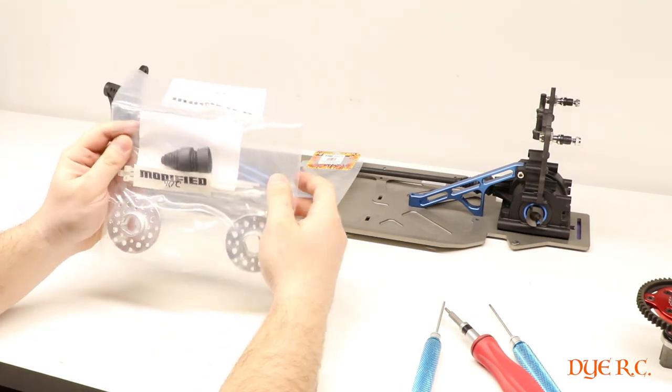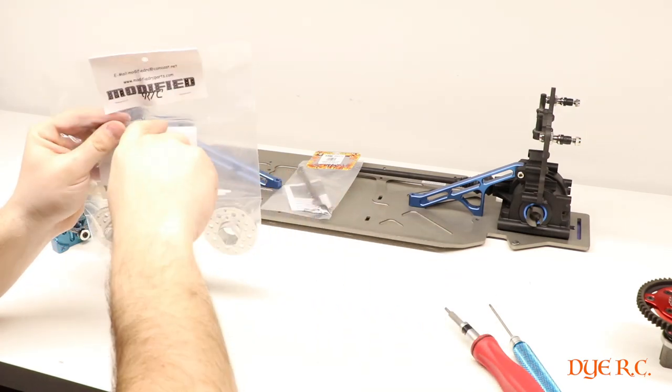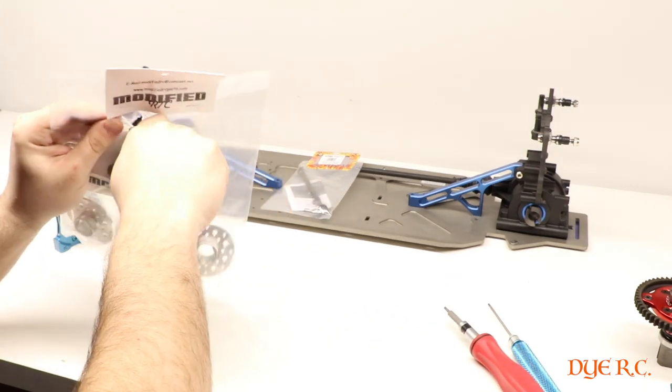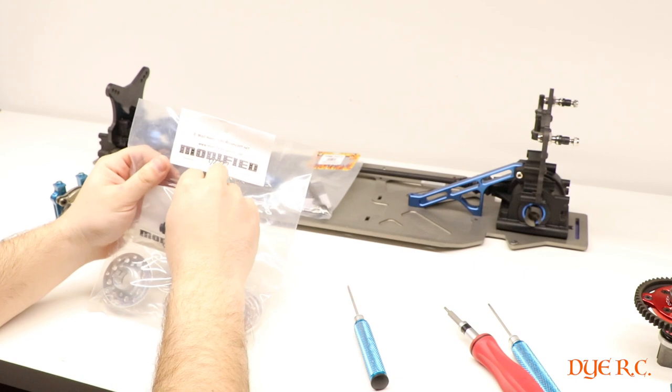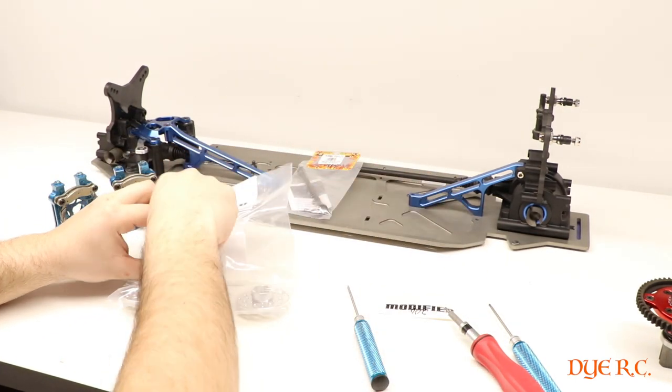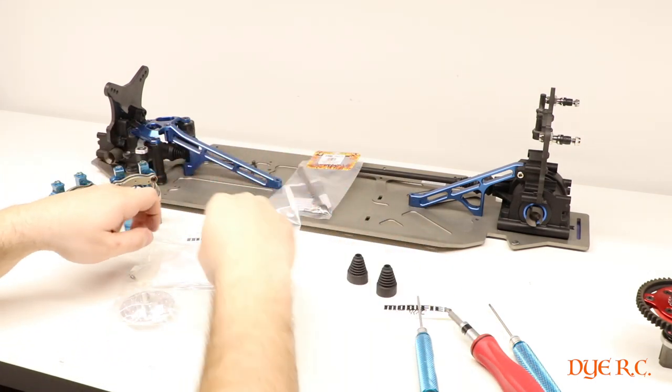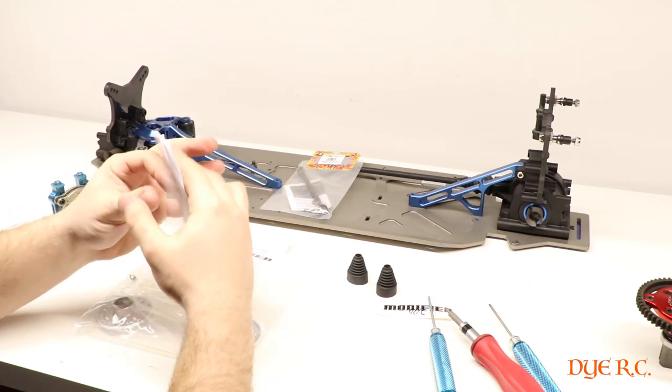It's the discs and then it'll allow you to run center boots to keep all the junk out of the center dog bones. Let's get it open real quick. They'll give you a sticker, you have your two center boots, there's two here, they give you some instructions.